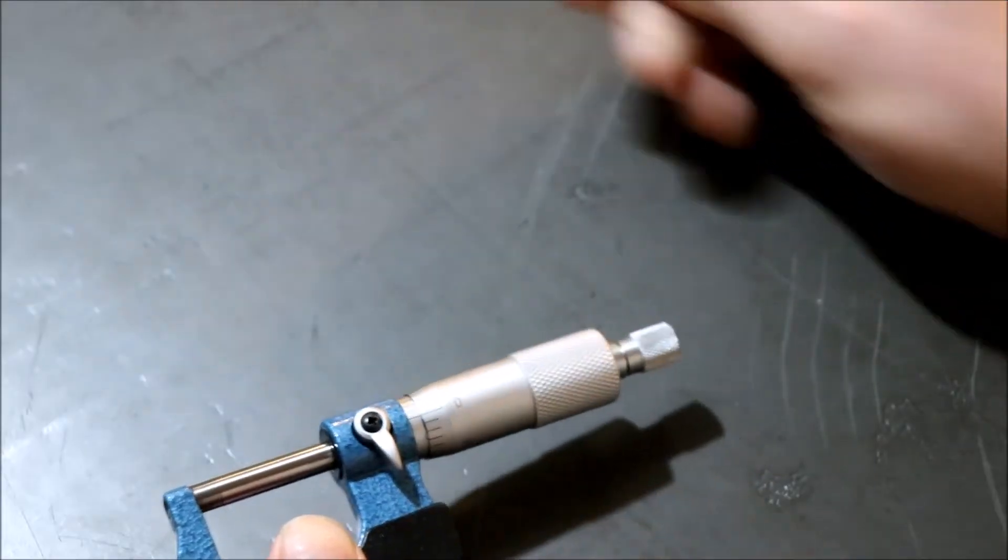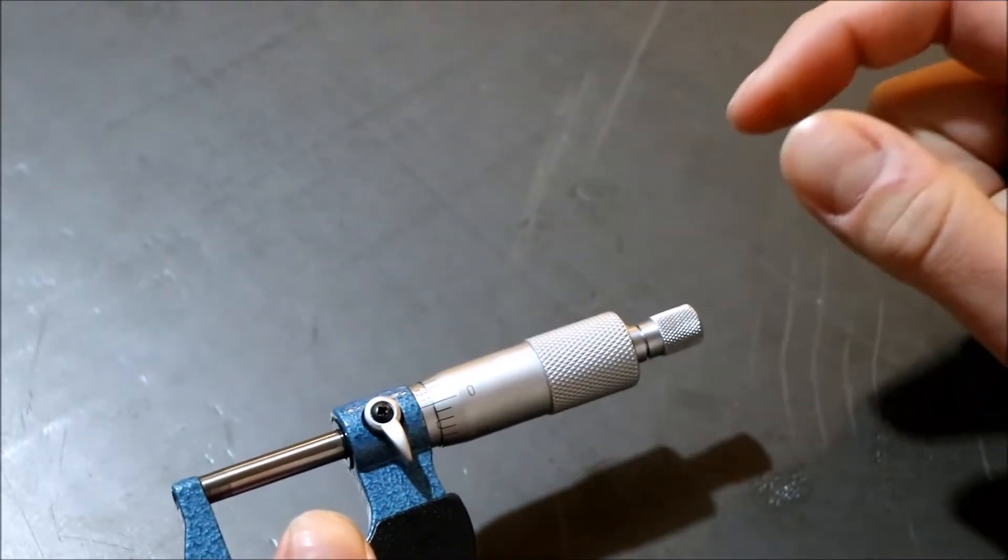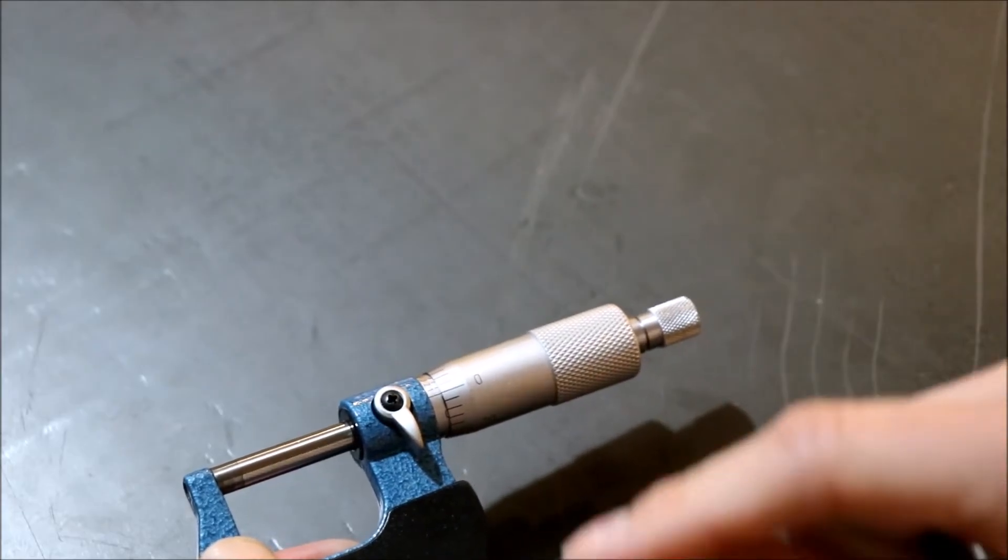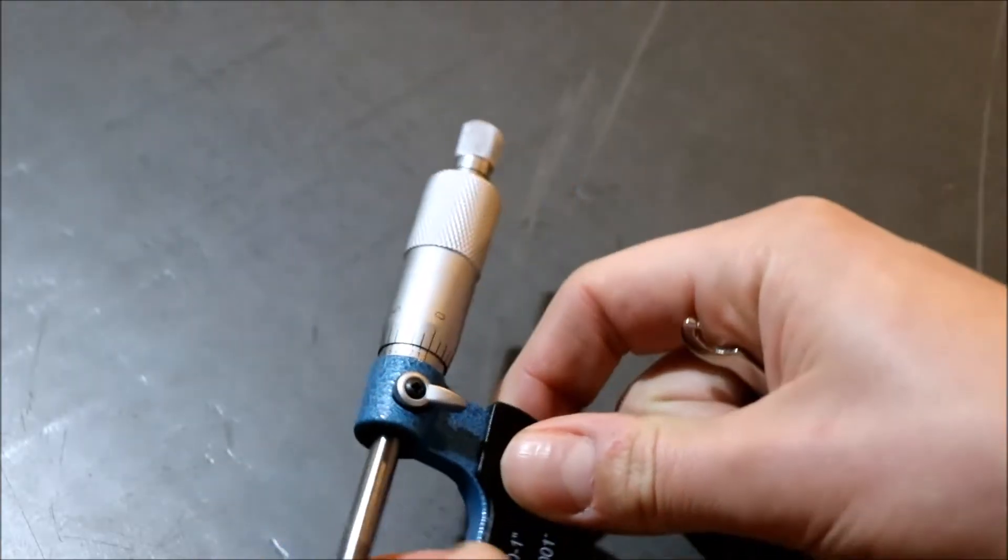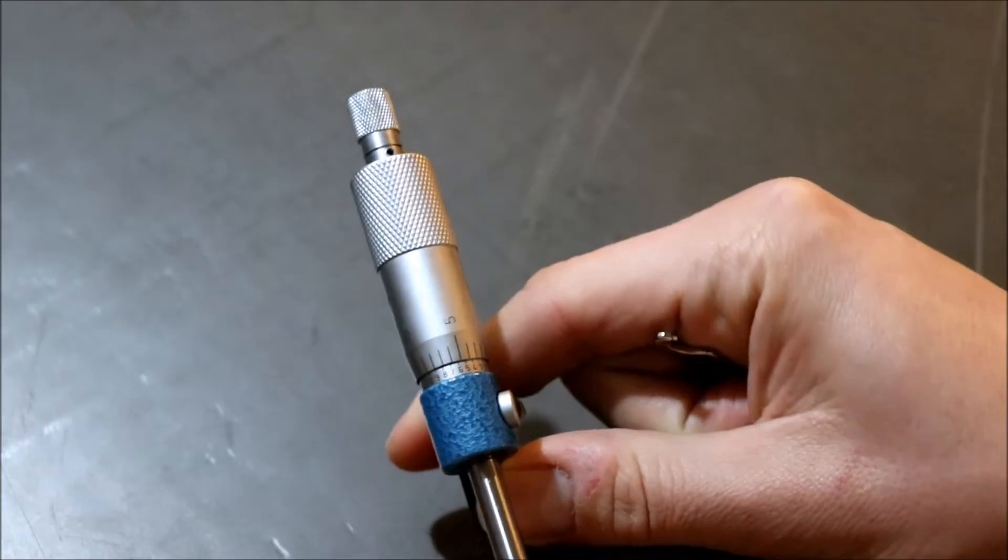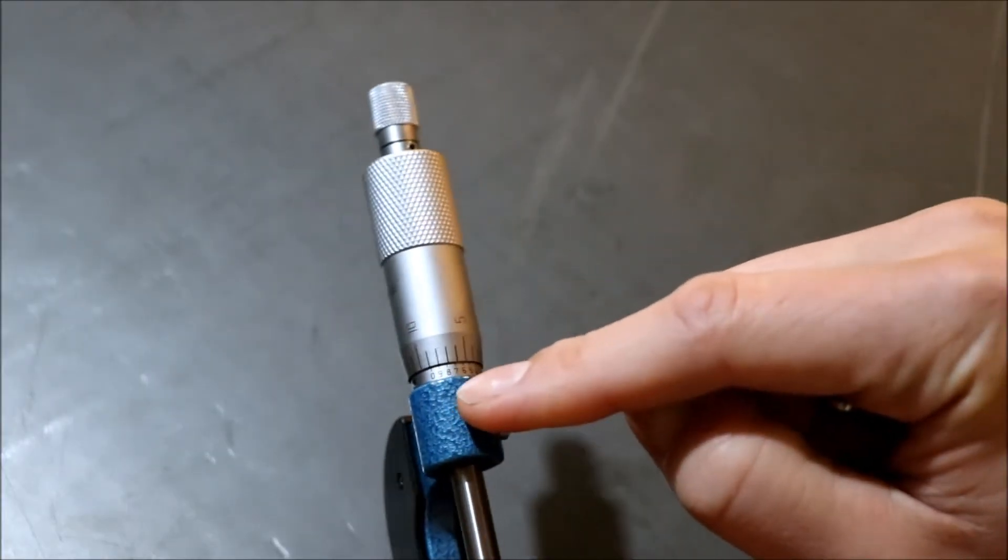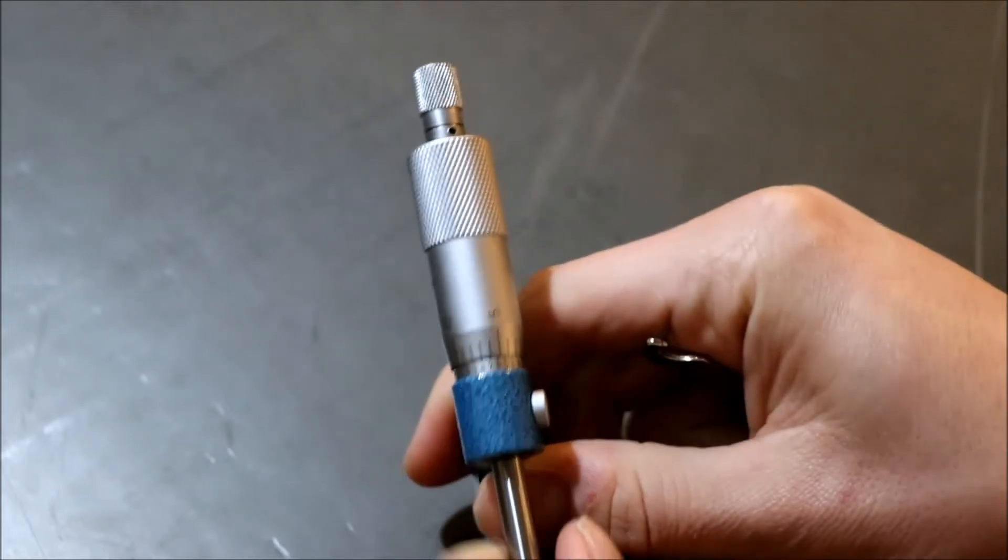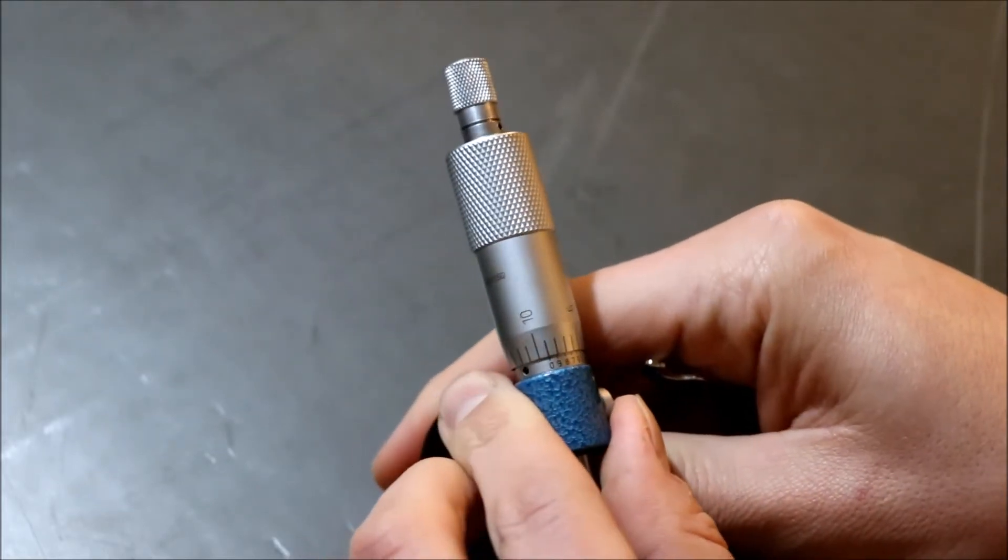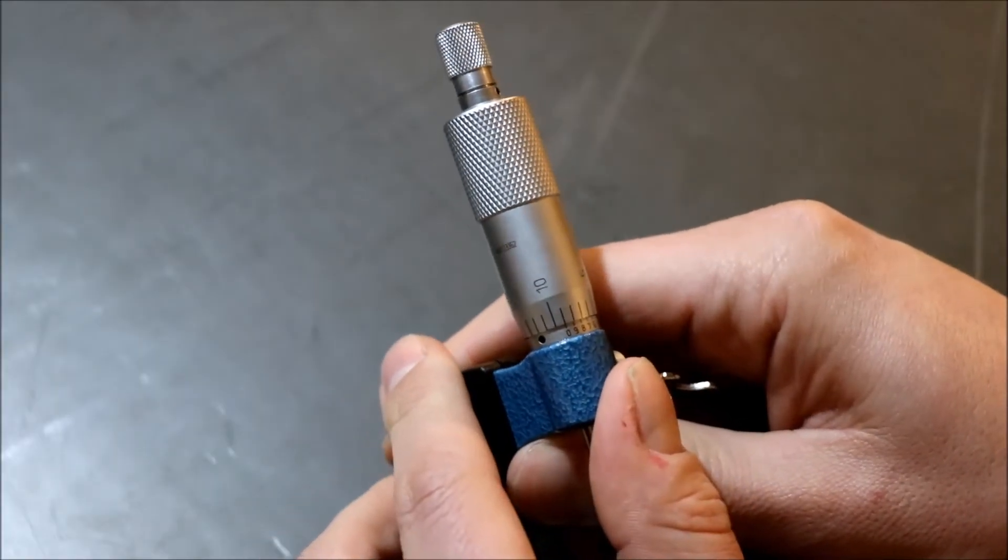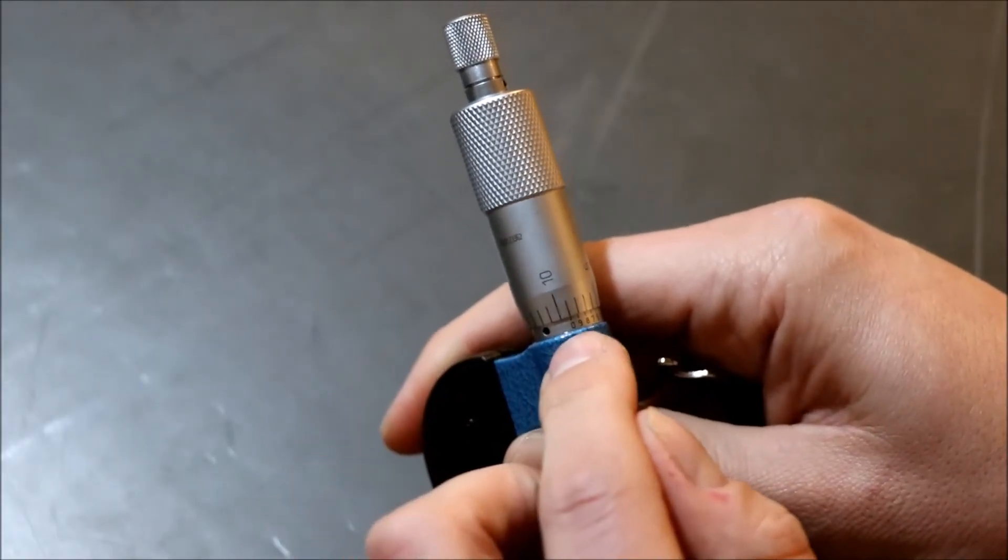there. The next thing we have to look at is our graduations from zero to ten here to measure to the one ten-thousandth point. So if you look here, when we're all zeroed in perfectly, we want the zero line to line up with the nine thousandths line on the barrel, and we are really